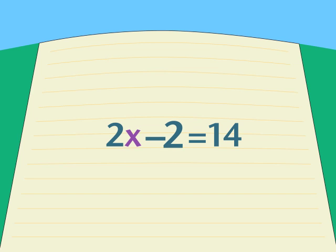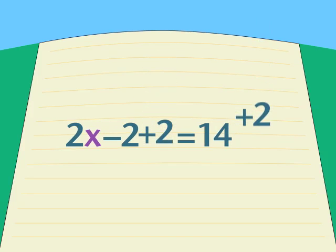We can move that negative 2 to the right side, where it becomes a positive 2, by adding positive 2 to both sides.